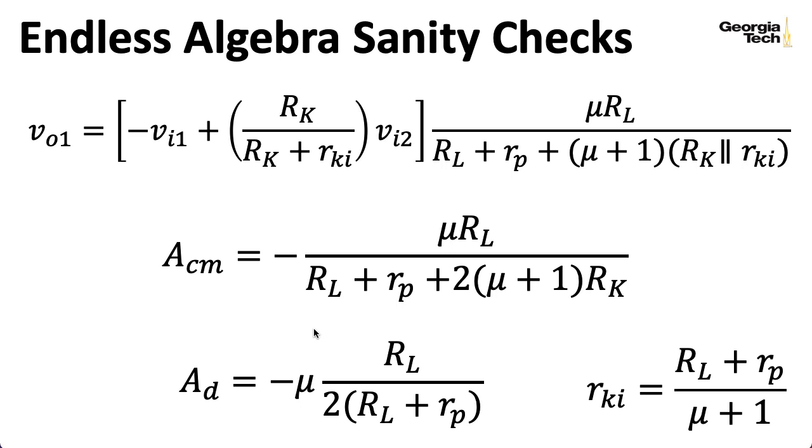So in either of these tasks, figuring out what ACM is or figuring out what AD is, the thing you should do is take RKI, plug it in here, and then explicitly write out this parallel combination. And then you'll find that this mu plus one will cancel a mu plus one that appears from that parallel combination. From there, there are several approaches. I'm not sure what's the best. All of them are pretty painful.